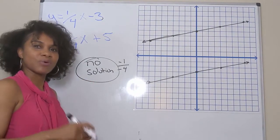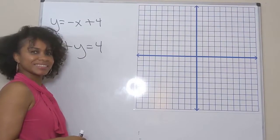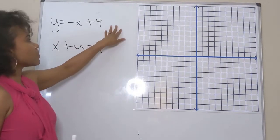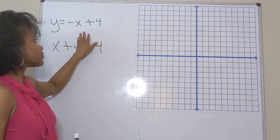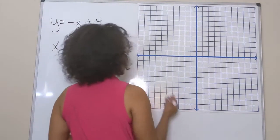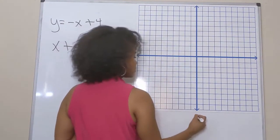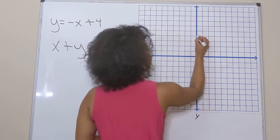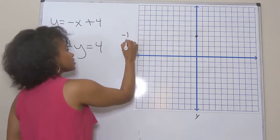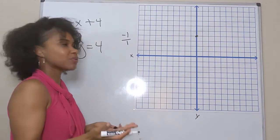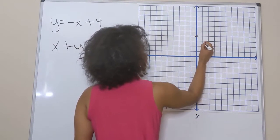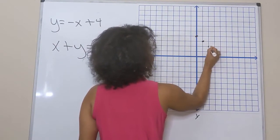Now let's try one more problem. Our first equation is y equals negative x plus four. The y-intercept is four, so the graph crosses the y-axis at four. My slope is negative one, which I write as negative one over one — so I go down one and to the right one.